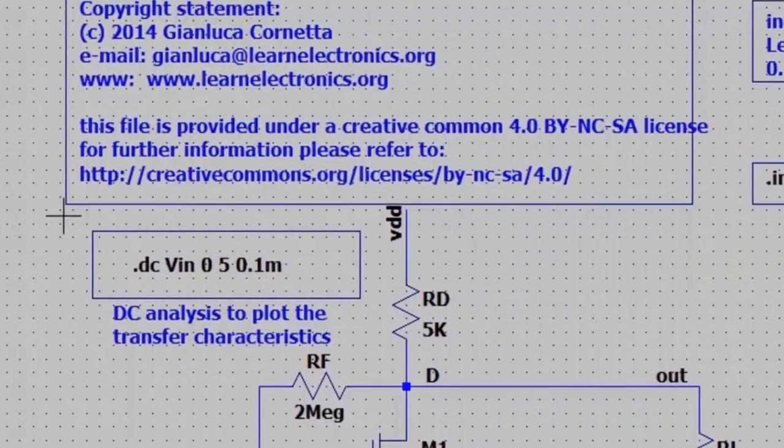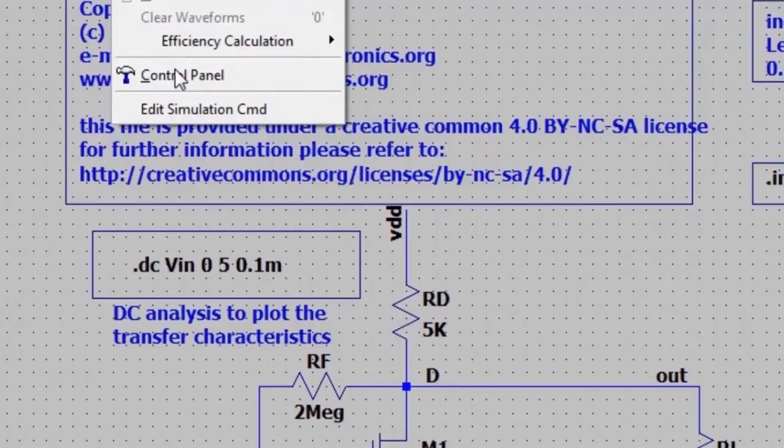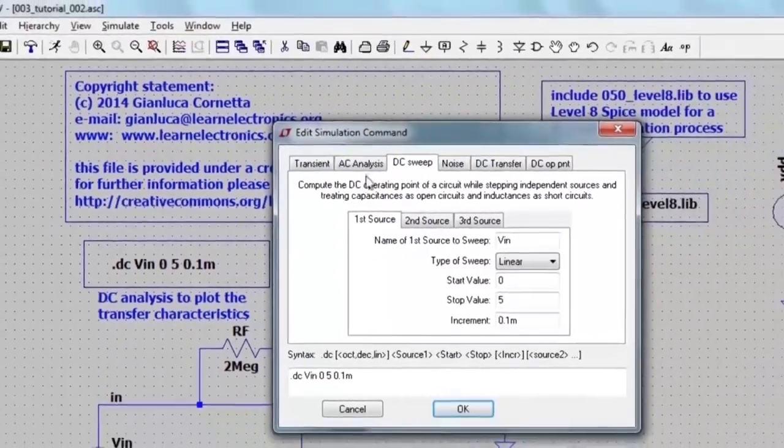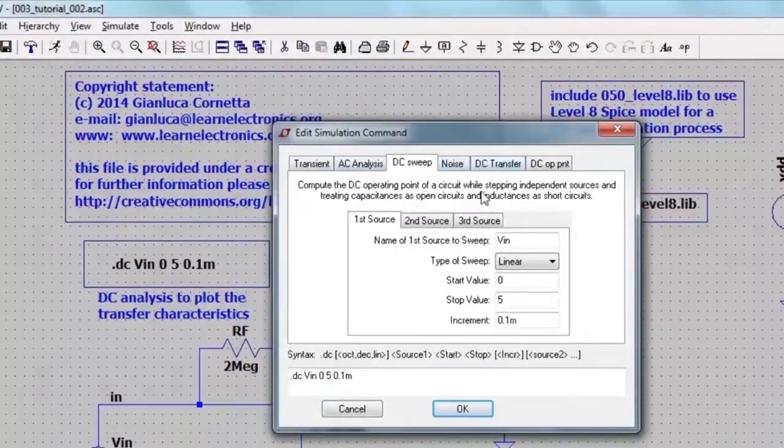To configure a DC sweep, I go to simulate, edit simulation command, and choose DC sweep. I have to specify the name of the source sweep, the type of sweep.